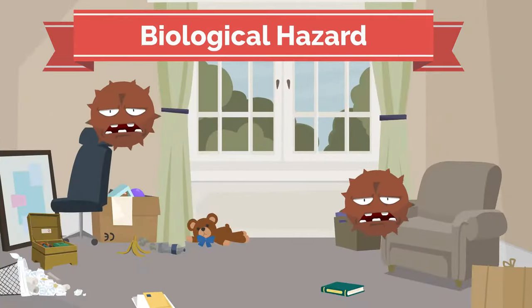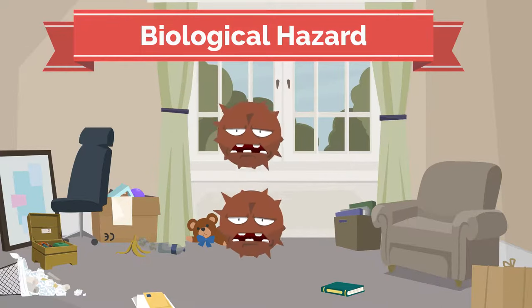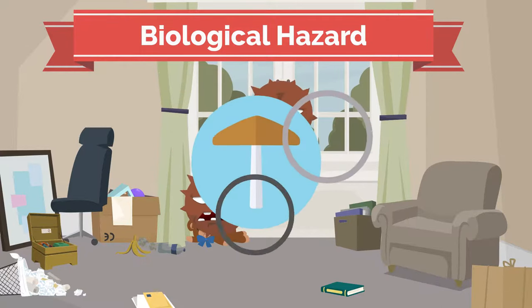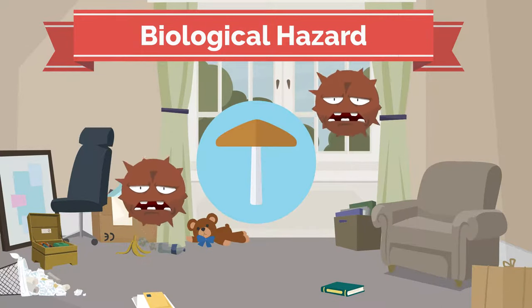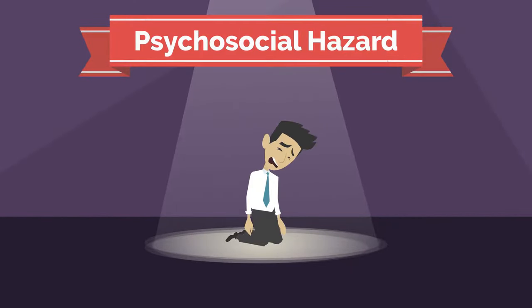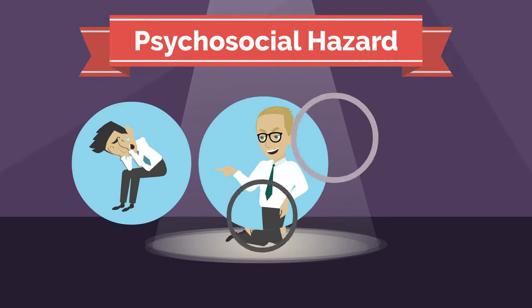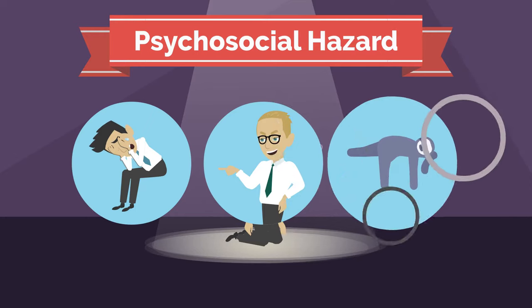A biological hazard is a hazard caused by an organic material. A common example is mould. A psychosocial hazard is the component of work that is likely to cause psychological harm to someone. Some examples of psychosocial hazards are work-related stress, bullying and harassment, and fatigue.